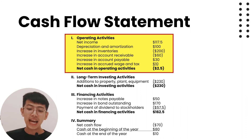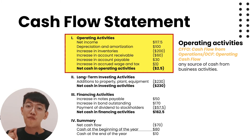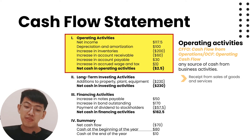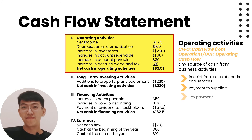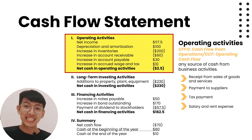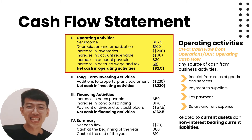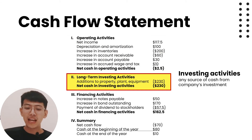The first activity is operating activities — any source of cash from business activities. We call this CFFO, or Cash Flow from Operations (OCF). Examples include cash received from sales of goods and services, payment to suppliers, tax payments, salary, and rent expense. Using the indirect method, operating activities relate to current assets and non-interest-bearing current liabilities on the balance sheet.